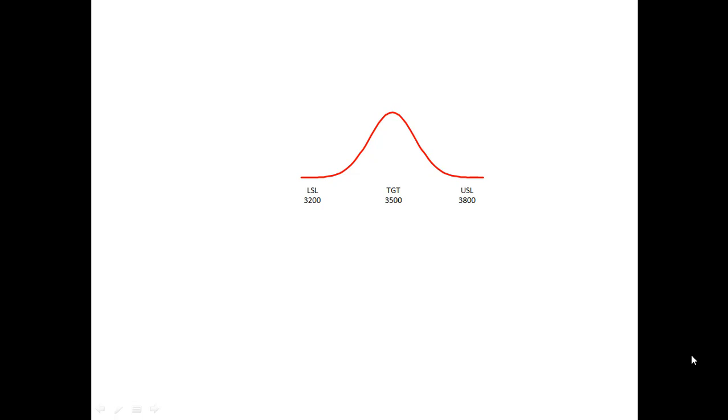We're interested to know how often we can actually create product or have the process achieve the outcomes - whatever these numbers represent. Can we in fact meet that requirement? We're setting up 3200 and 3800 as spec limits and we're going to define as defective anything that would fall outside of those limits.